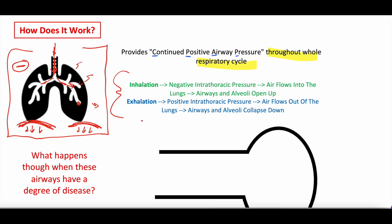When we exhale, the exact opposite happens. The diaphragms relax and push upwards, creating positive pressure that pushes on the lungs. The lungs deflate and air flows out. That's a normal breath. With some of these medical conditions that need CPAP, this respiratory cycle is abnormal — it's unable to do what it's supposed to — so we apply CPAP, or continuous positive airway pressure.